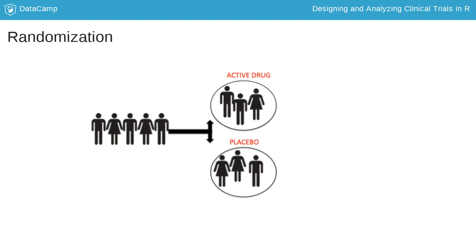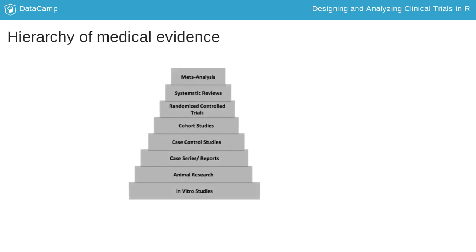In controlled trials, patients are typically randomized to one of at least two treatment arms. Randomized controlled trials are considered the gold standard for assessing the effects of a new treatment and are extremely valuable in medical research. A well-conducted trial can provide strong evidence for a treatment effect by being able to reduce the impact of confounding that often affects observational epidemiological studies such as cohort studies.